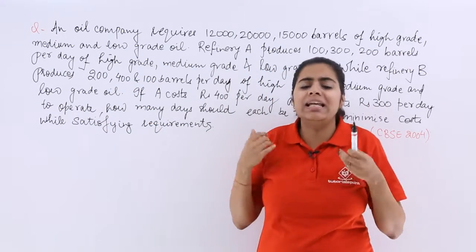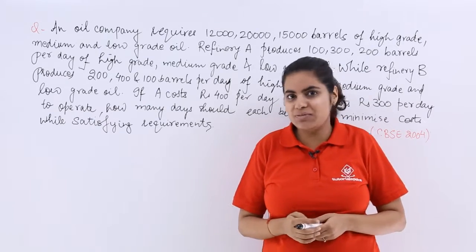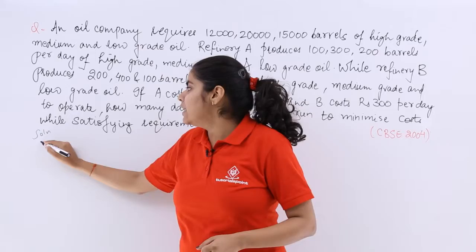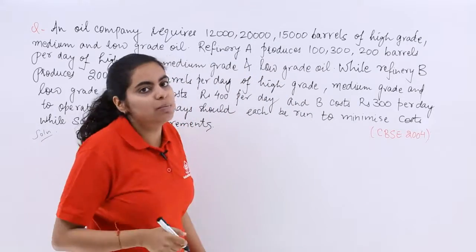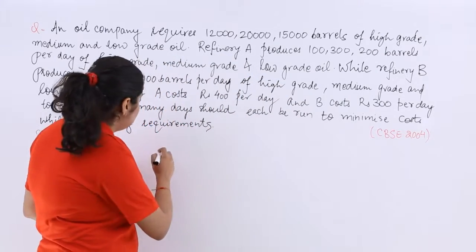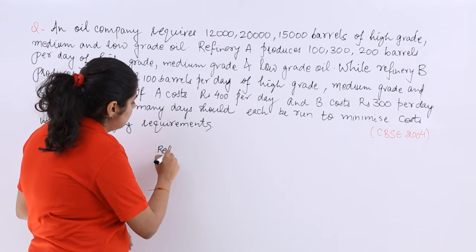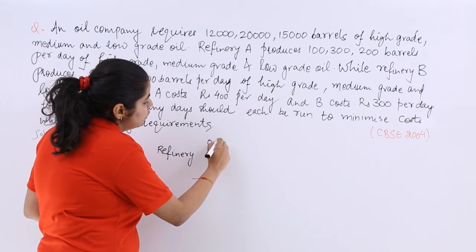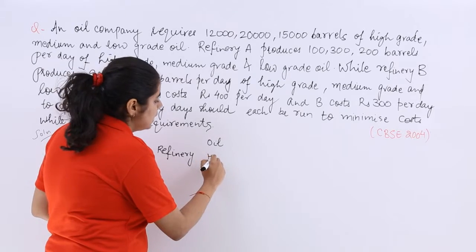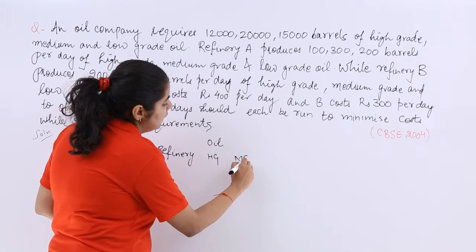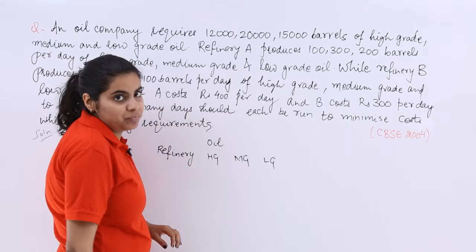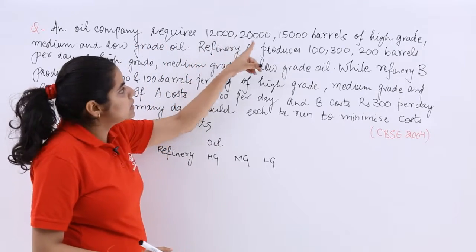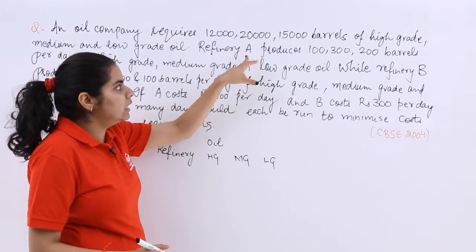So this much information is not easy to decipher until and unless we draw a table. So I write here solution and let's draw a table. So the table has few contents. The contents are like we are talking about the refinery. We are talking about different types of oil. The oil may be high grade, medium grade and low grade oil. So what is it like? The oil company requires these many barrels of high grade and everything. We will see it later.